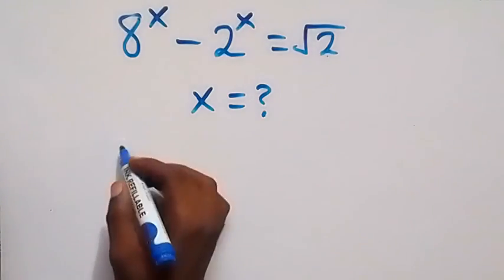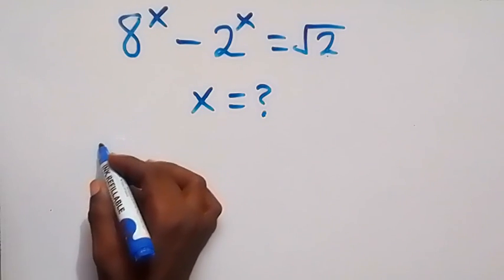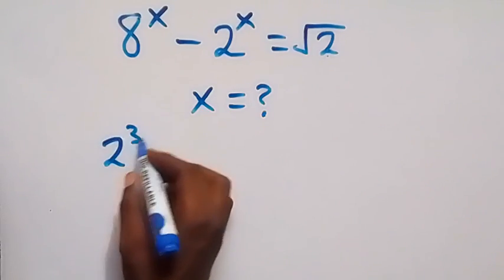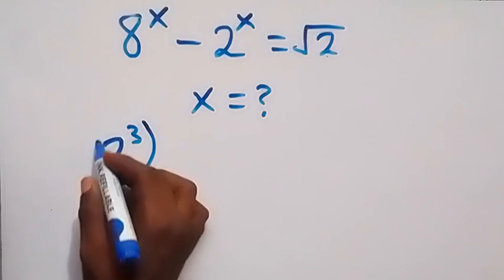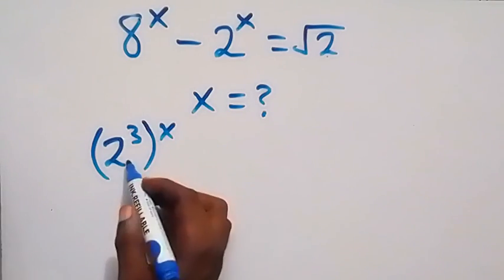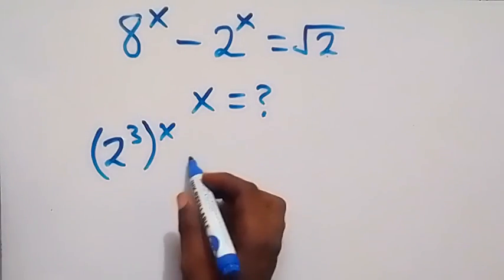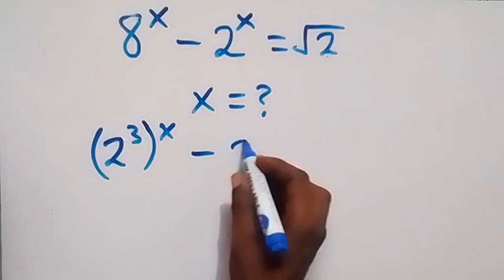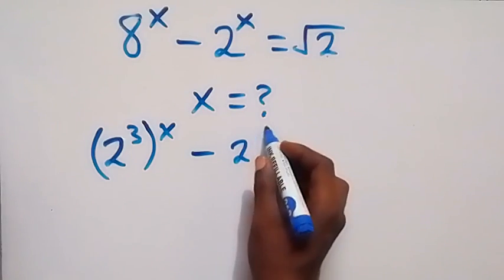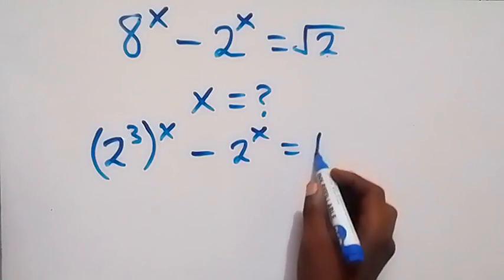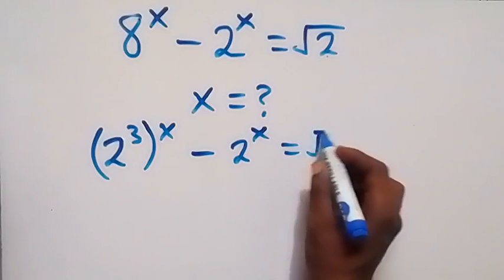We can write this as 2 raised to power 3, then raised to power x. That's the same thing as 8 raised to power x, then minus 2 raised to power x equals to root 2.